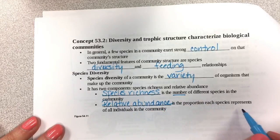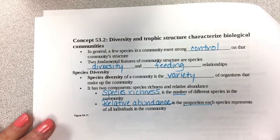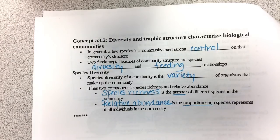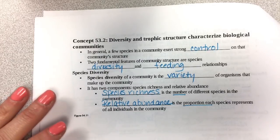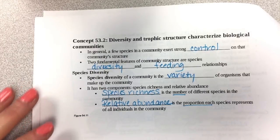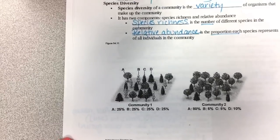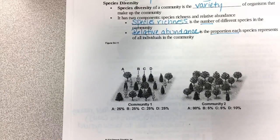Relative abundance is the proportion of each species out of all individuals in the community. You can have different communities that exhibit different richnesses and abundances.